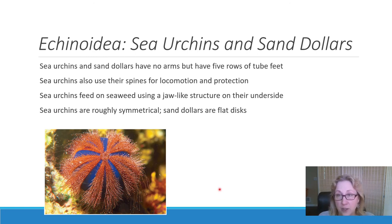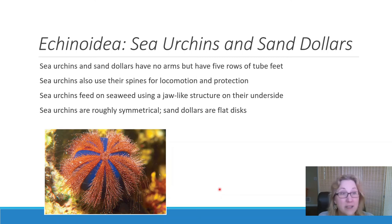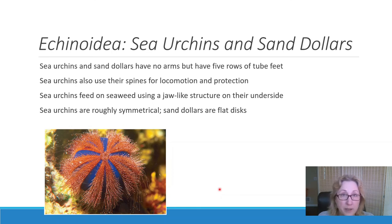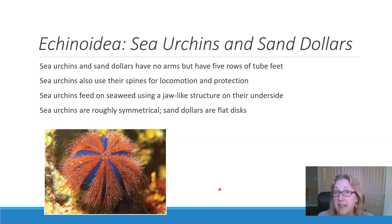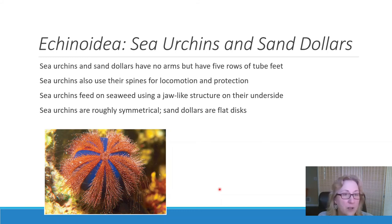The Echinoidea — sea urchins and sand dollars — are slow-moving and generally not carnivorous. They can be scavengers, and many eat seaweed and algae. Their spines are their defense, and many are extremely well protected. Some of their spines break off when they stick into something, kind of like a porcupine, making them extremely unpleasant to eat. But there are things that do eat them — sea otters love to eat sea urchins because once you get past the spines, they're quite tasty inside.